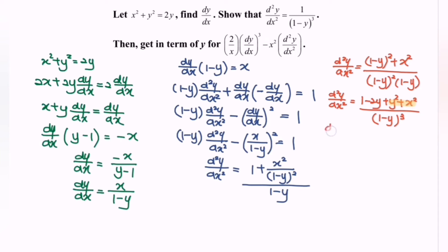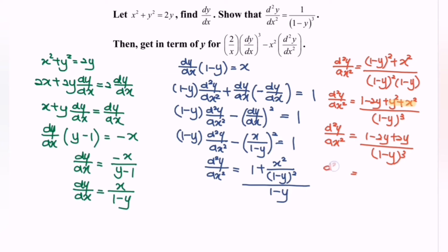So for the second derivative, substituting x squared plus y squared equals 2y, we have 1 minus 2y plus 2y over (1 minus y) to the power of 3. After simplifying, the second derivative equals 1 over (1 minus y) to the power of 3, which is what we needed to show.